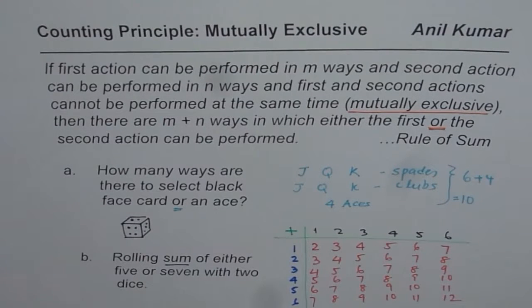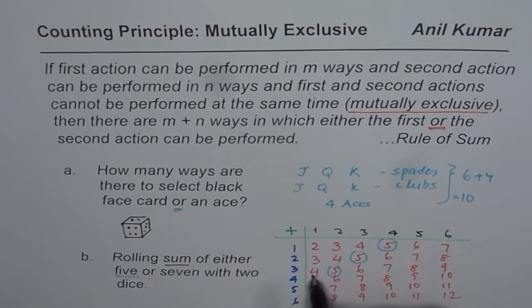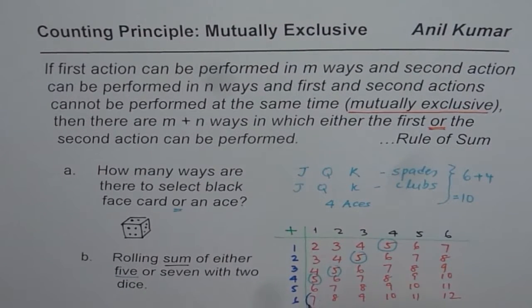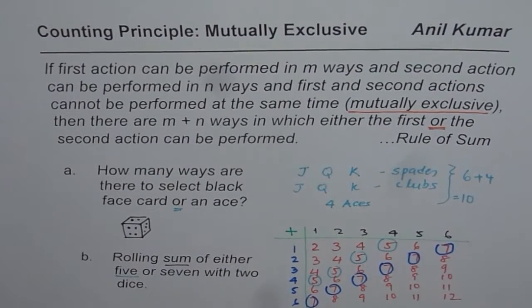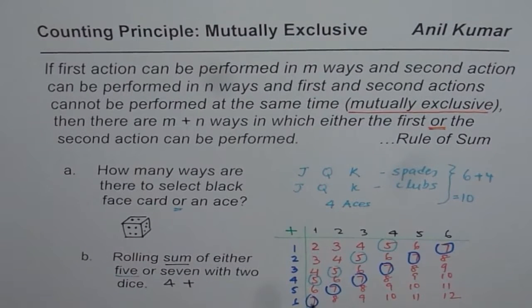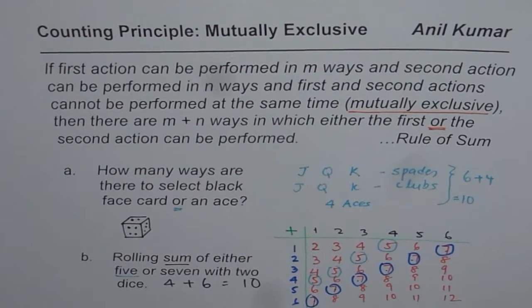Now, how many sums of five are there in the table? The fives are diagonally placed — counting them gives four fives. And how many sevens are there? The sevens are also diagonally placed — counting gives six sevens. So the answer is four plus six, which equals ten.